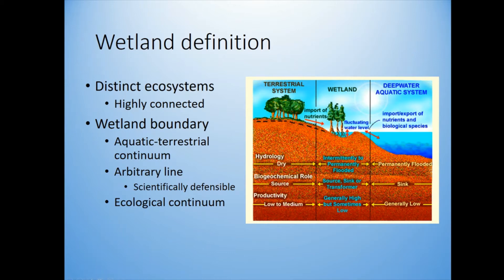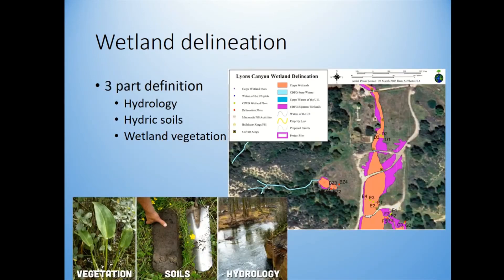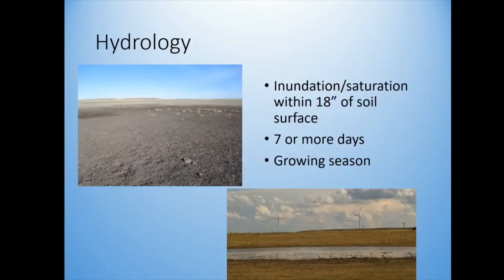It's tricky to determine what is and isn't a wetland, but we use a three-part definition: hydrology, hydric soils, and wetland vegetation. Hydrology means is there actually water there? Hydric soils are soils developed under saturated conditions. And wetland vegetation means do we find plants that only grow in saturated soil conditions?